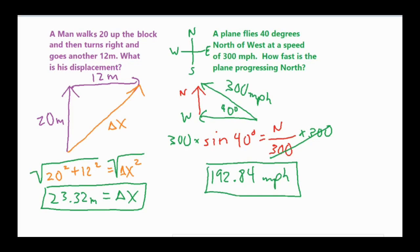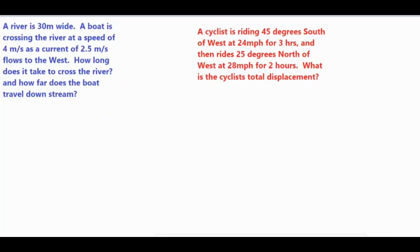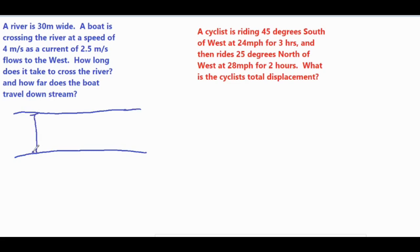That concludes our first two more basic vector problems. Now we have two problems that are slightly more difficult. We have a river that is 30 meters wide — let's draw this out. A boat is crossing the river at a speed of 4 meters per second as a current of 2.5 meters per second flows to the west. The question asks how long it takes to cross the river and how far the boat travels downstream.